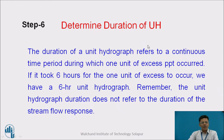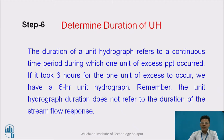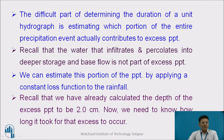Determine the duration of the unit hydrograph. A particular rainfall event has a particular duration. The duration of the unit hydrograph refers to the duration over which one unit of excess rainfall or precipitation has occurred. If it took 6 hours for 1 unit of excess to occur, we have a 6-hour unit hydrograph. If 1 cm of rainfall excess took place in 3 hours, it is a 3-hour unit hydrograph; if in 8 hours, it is an 8-hour unit hydrograph. Remember, the unit hydrograph duration does not refer to the duration of streamflow response, but rather to the duration of rainfall — the duration of precipitation.